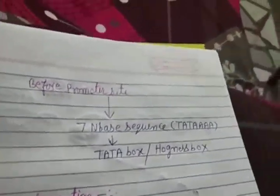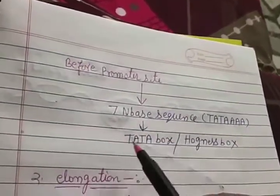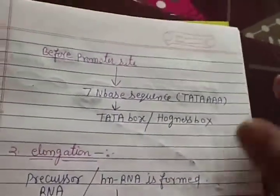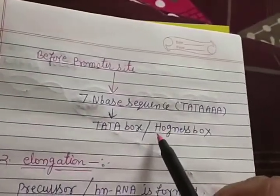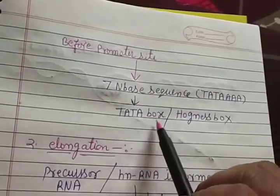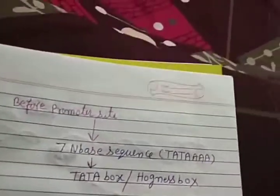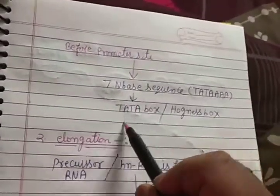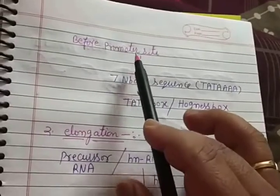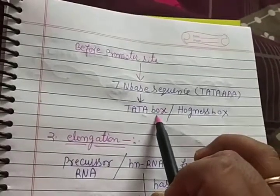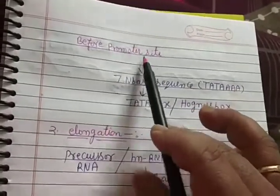Before the promoter site, there is a seven-nitrogen-base sequence called the TATA box or Hogness box. The TATA box sequence is TATAAA. The TATA box is an essential part of the promoter site, and it provides help to RNA polymerase II for binding with the promoter site.